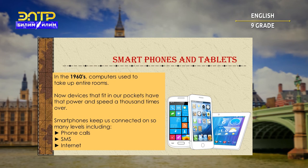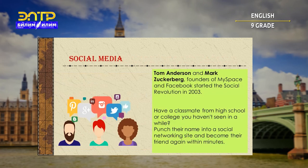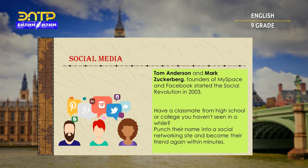The Internet carries an extensive range of information resources and services, such as the interlinked hypertext documents of the World Wide Web and the infrastructure to support email. Tom Anderson and Mark Zuckerberg are founders of MySpace and Facebook, and they started the social revolution in 2003. A social networking service is an online service, platform, or site that focuses on facilitating the building of social networks or social relations among people who share interests, activities, backgrounds, or real-life connections. If you have a classmate from high school or college you haven't seen in a while, just search their name on a social networking site and reconnect within minutes.